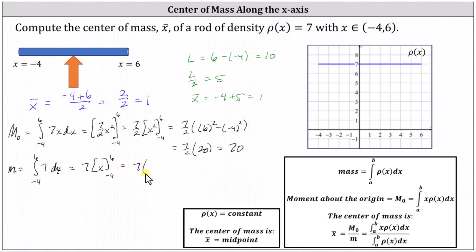This gives us seven times the difference of six and negative four, which is equal to seven times 10, which is 70. Of course, we get the same result.